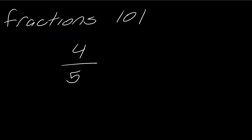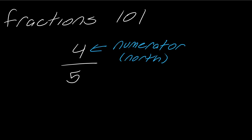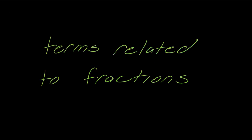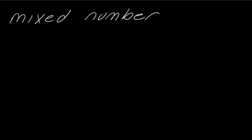Let's talk about fractions 101. I have four-fifths here. The four is what we call the numerator — you can remember that as 'numerator north.' Five is on the bottom — that's the denominator, 'denominator down.' A couple of terms related to fractions we'll cover are the mixed number and the improper fraction.